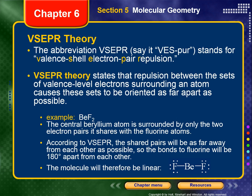For example, in beryllium fluoride, the central beryllium atom is surrounded by only the two electron pairs it shares with fluorine atoms, meaning there are no lone pairs around beryllium. According to VSEPR theory, the shared bonding pairs will be as far away from each other as possible, so the bonds to fluorine will be 180 degrees from each other. The molecule will therefore be linear.